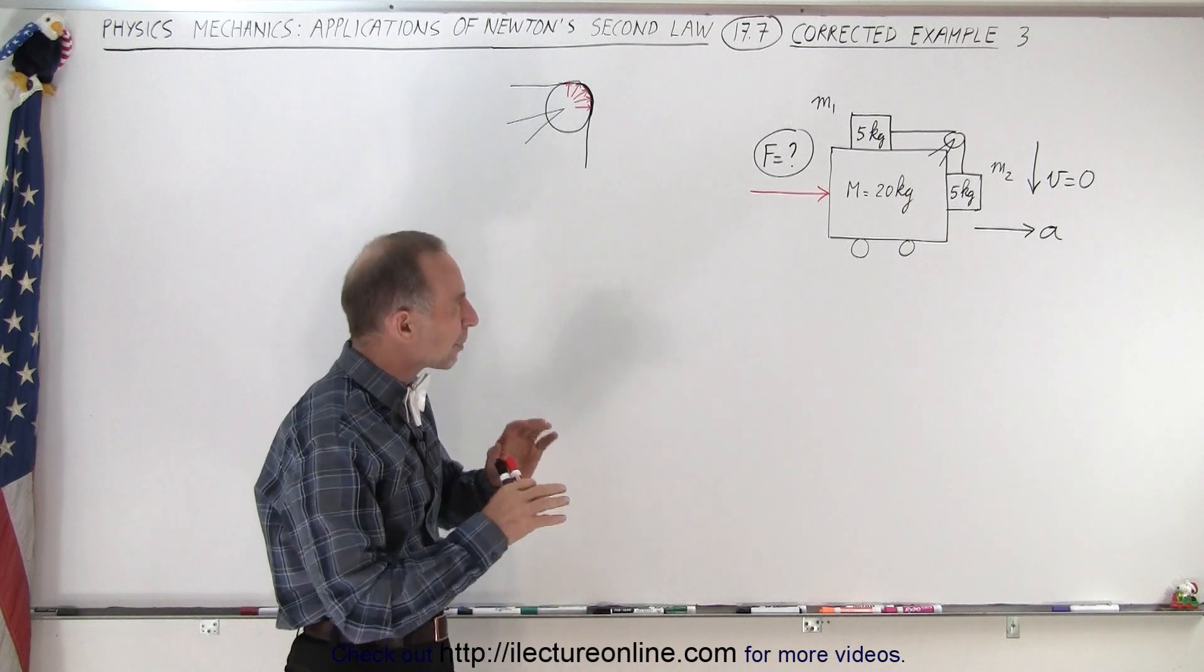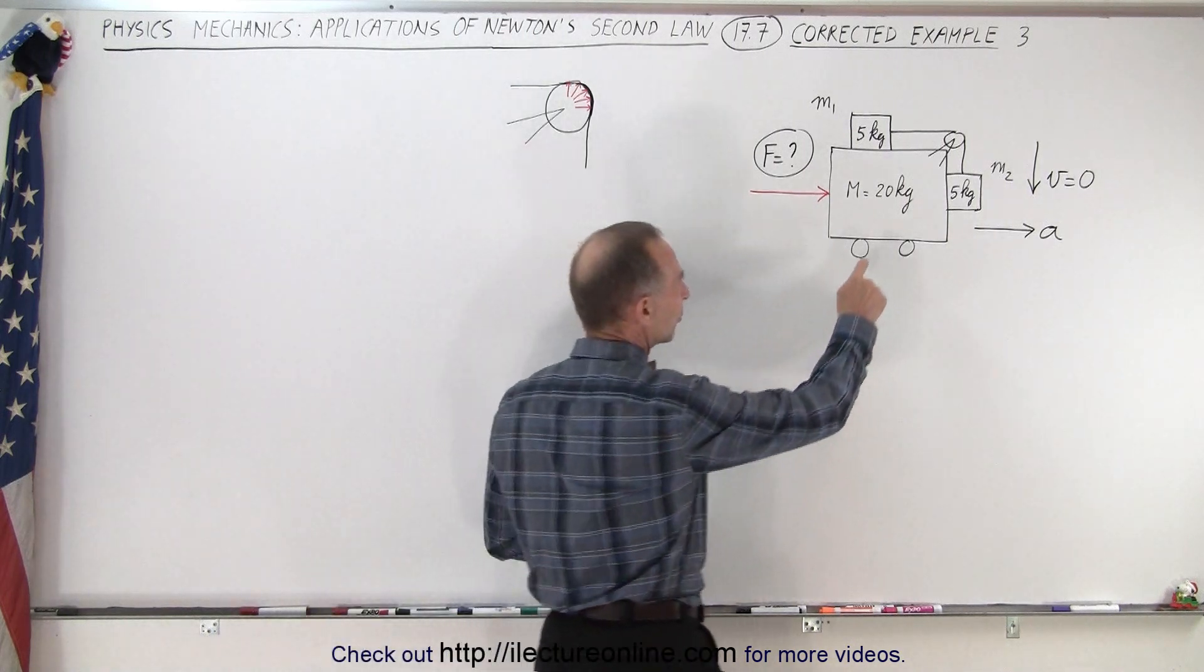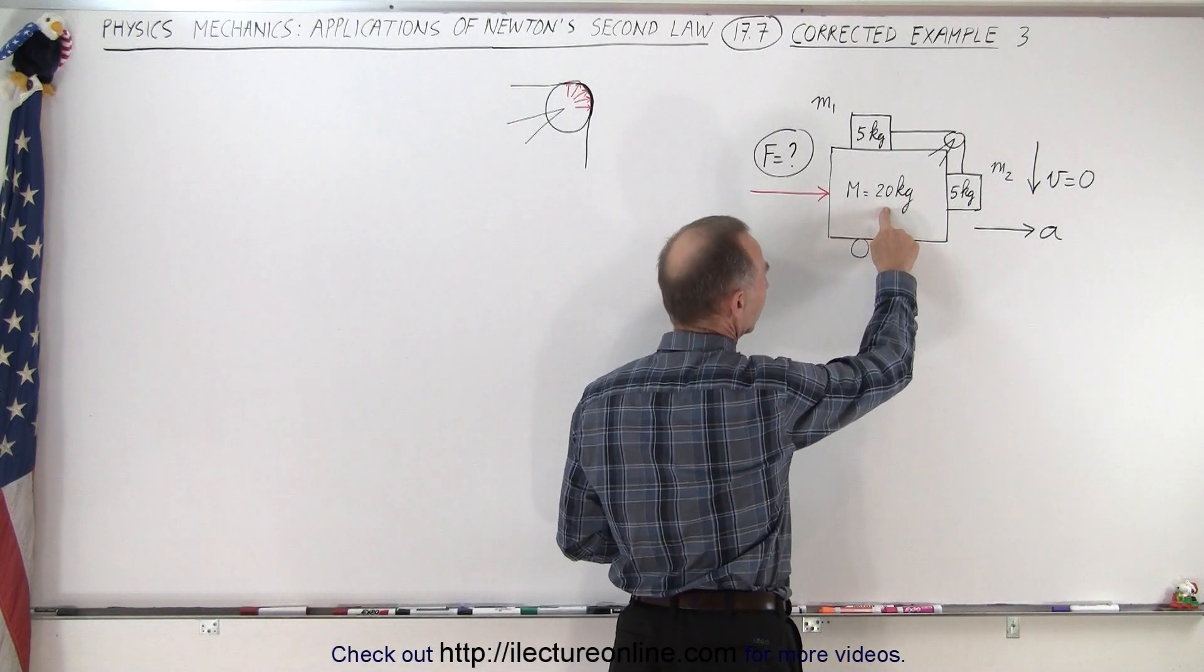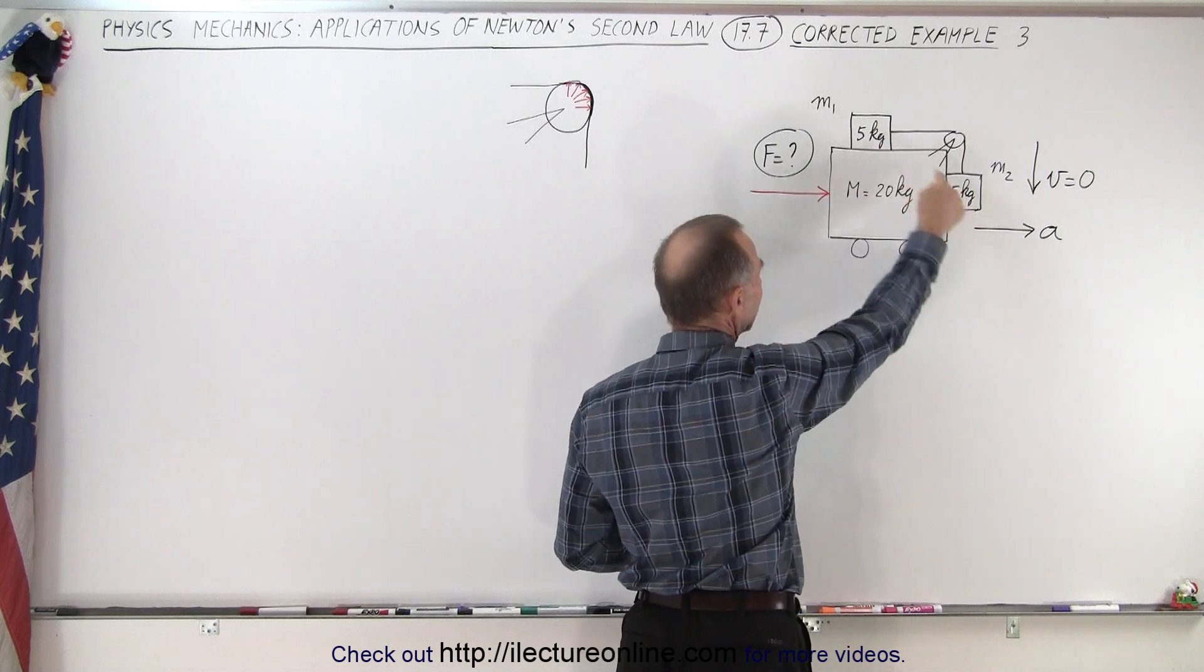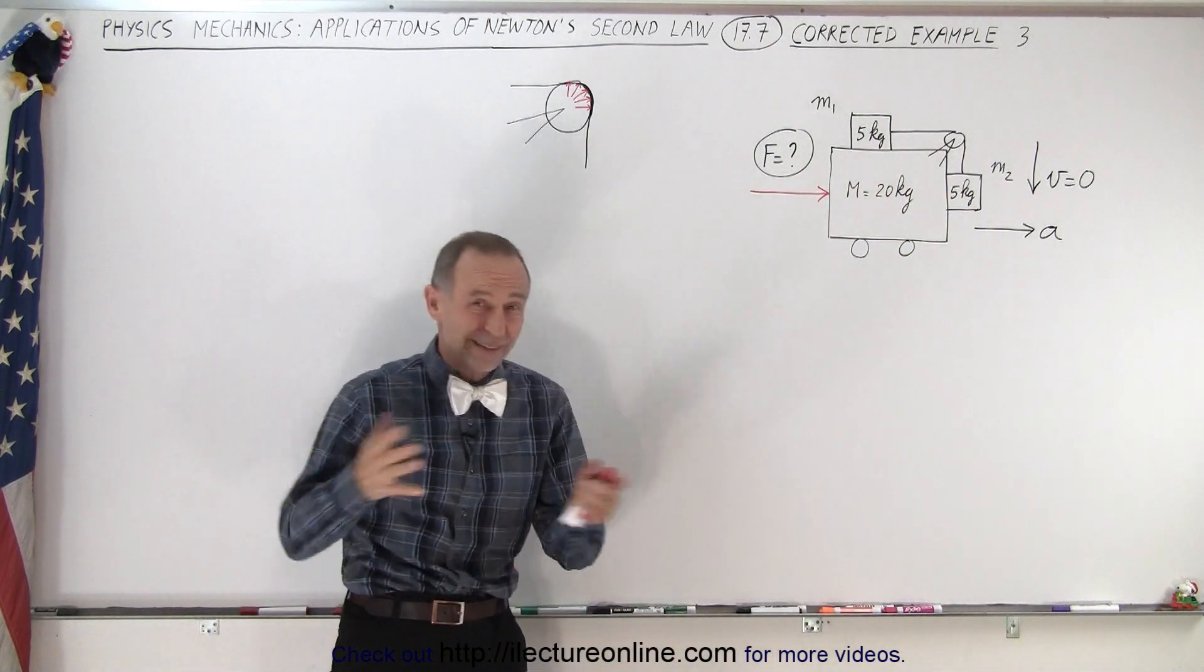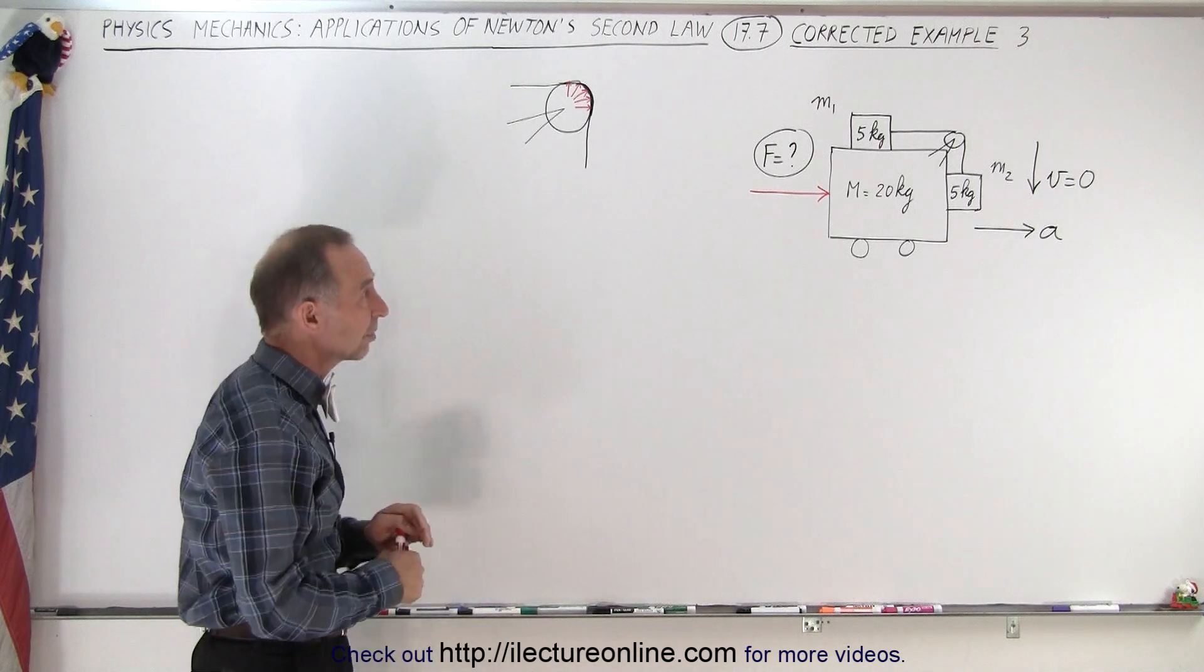I don't exactly remember the numbers that were used in the previous problem. I think the big mass was 20 kilograms. The two masses here were equal at 5 kilograms each. It doesn't really matter if it's exactly the same. The methodology should be the same.